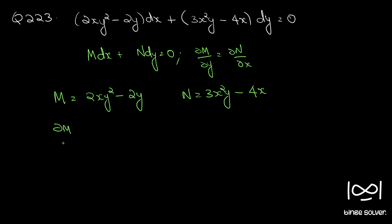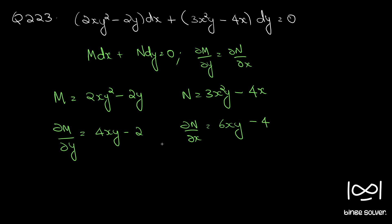We first check whether the given differential equation is exact using the necessary and sufficient condition: ∂M/∂y equals ∂N/∂x. So ∂M/∂y is 4xy minus 2, and ∂N/∂x is 6xy minus 4. Since ∂M/∂y is not equal to ∂N/∂x, the differential equation is not exact.